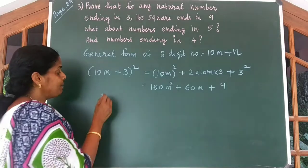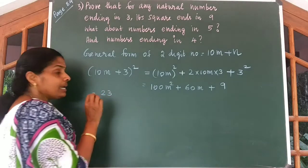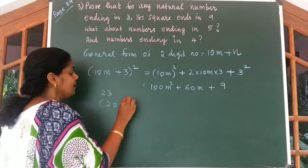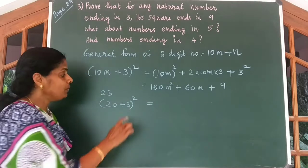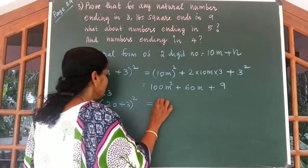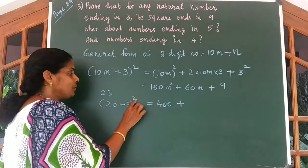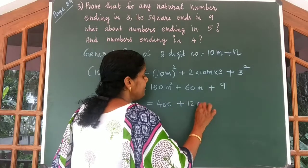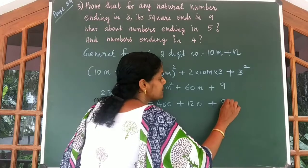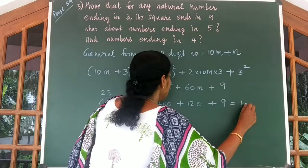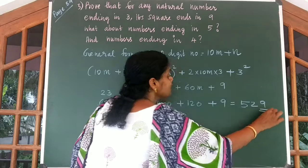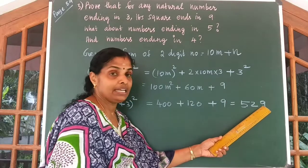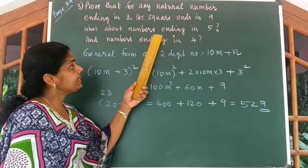Let me give you an example. If you take 23 square, we can write it as (20 plus 3) the whole square. So you get 20 square equals 400, plus 2 into 20 into 3 equals 120, plus 3 square equals 9. If you add all this you get 529. So for numbers ending in 3, each square will always end in 9.